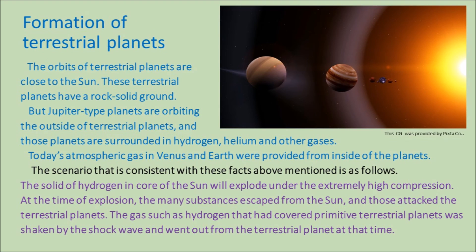The formation of terrestrial planets is explained as follows: the orbits of terrestrial planets are close to the sun and these planets have a rock-solid ground, whereas Jupiter-type planets orbit on the outside and are surrounded by hydrogen, helium, and other gases. Today's atmospheric gas in Venus and Earth were provided from inside the planets. The scenario consistent with these facts is that the solid hydrogen in the core of the sun exploded under extremely high compression; at the time of explosion, many substances scattered from the sun and attacked the terrestrial planets, and the gas covering the primitive terrestrial planets was shaken by the shock wave and expelled.